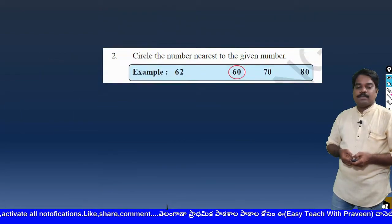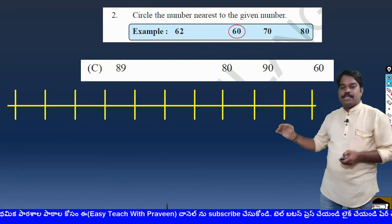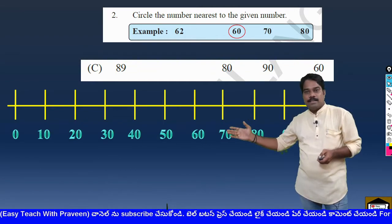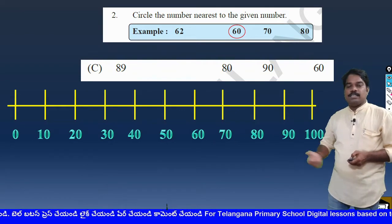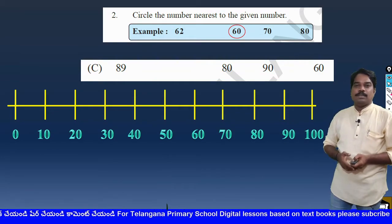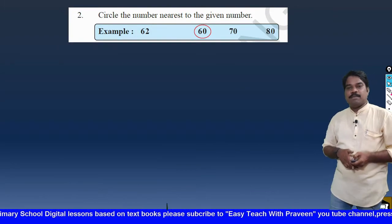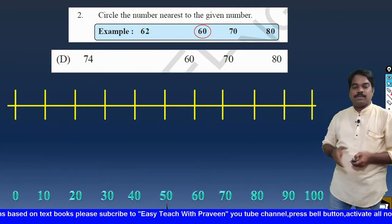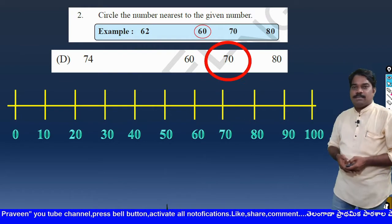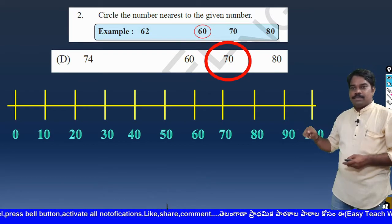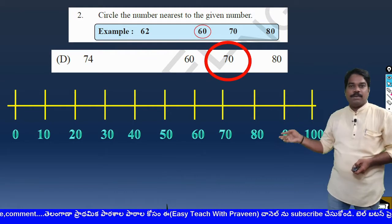Next: 89 — is it nearest to 80, 90, or 60? After 80 we count 81, 82, 83, 84, 85, 86, 87, 88, 89, then 90. So 89 is just adjacent to 90 — it is a consecutive number — so we circle 90. Next: 74 is given, nearest to 60, 70, or 80? From 70 we count 71, 72, 73, 74 — and then 75, 76, 77, 78, 79, 80. So 74 is nearer to 70, that's why we circle 70.